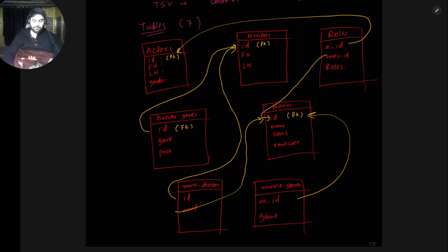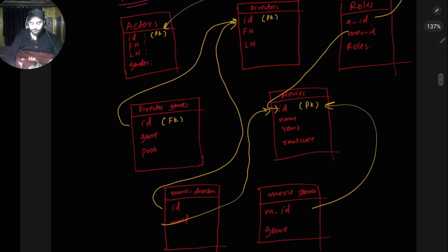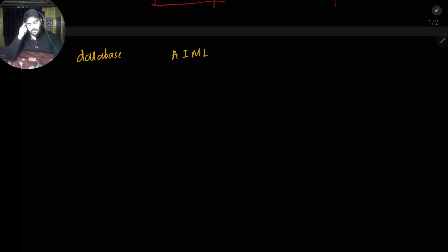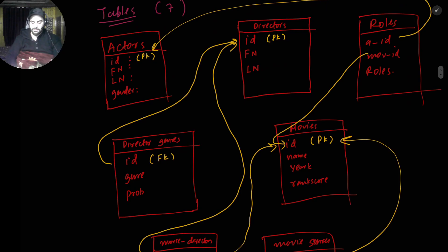We have seven tables; in each table there are some attributes, some are primary keys and some are foreign keys. We made the schema accordingly. To reiterate: actors has id, first_name, last_name, gender — id is the primary key. Directors has id, first_name, last_name — id is the primary key. Roles has actor_id, movie_id, and role. In total seven tables. We've created the database named AIML and also created this schema.